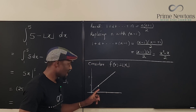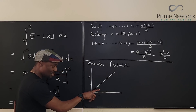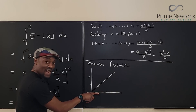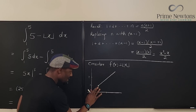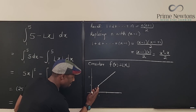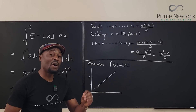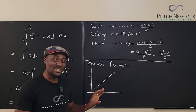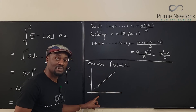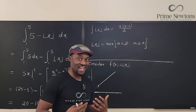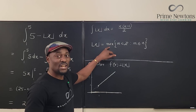With the floor function, you're not allowed to gradually move up — you must move by jumps. So the inclined part is flattened: everything is flat between integers. The floor function gives the largest integer less than or equal to your input.